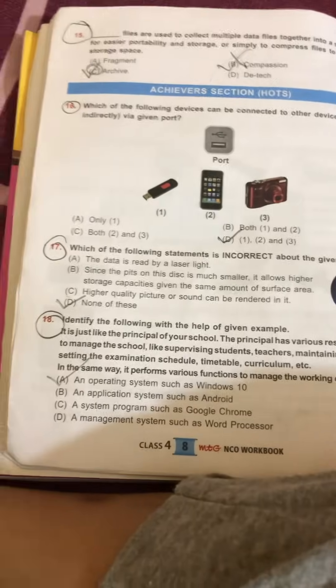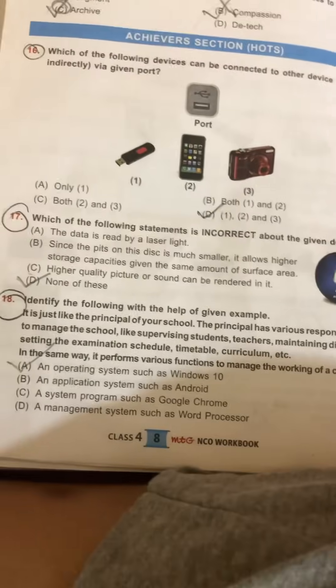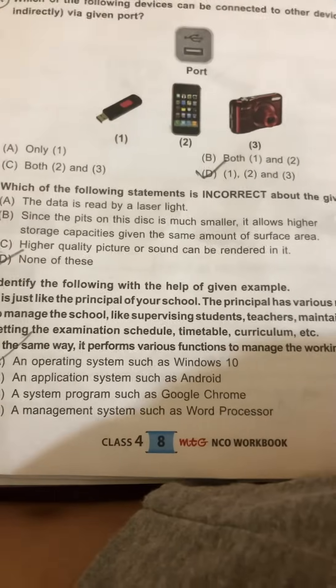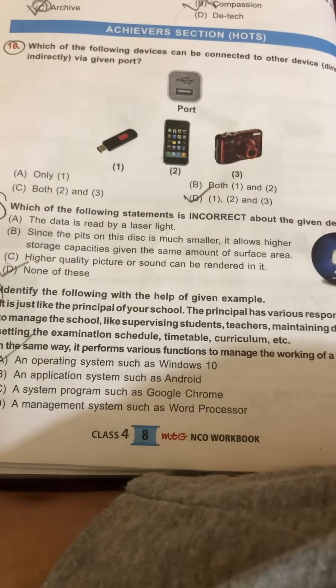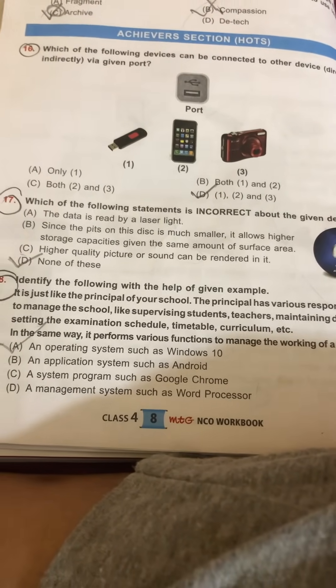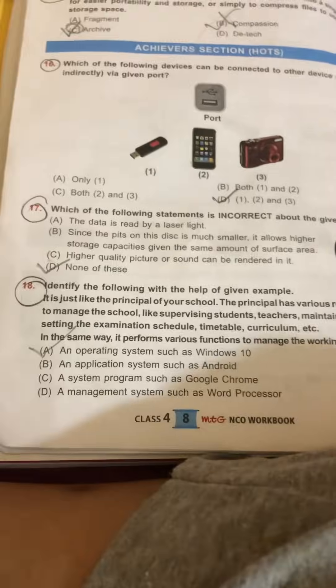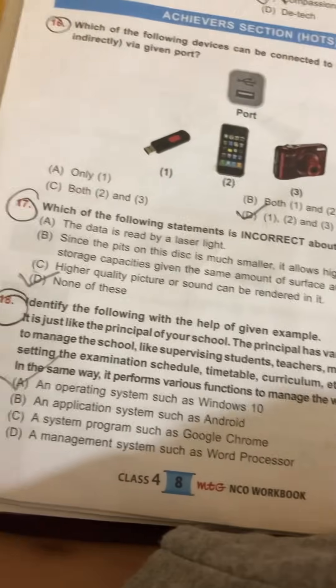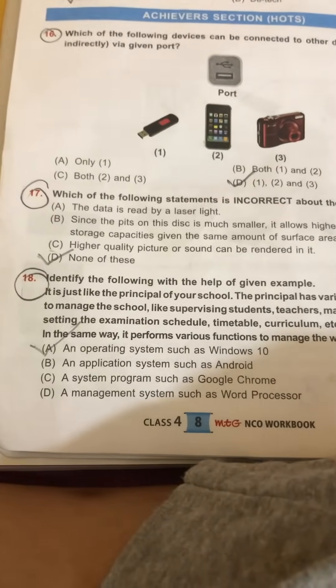Which of the following statements is incorrect about the Blu-ray disc? The data of a Blu-ray disc is read by laser light. Since the pits on the disc are much smaller, it allows higher storage capacity given the same amount of surface area — that is true. Higher quality picture or sound can be rendered — that is also true. So the correct option is Option D: none of these, meaning none of the statements are incorrect.